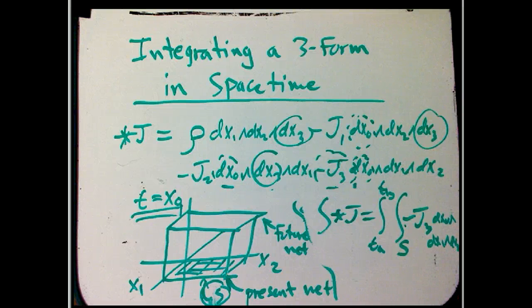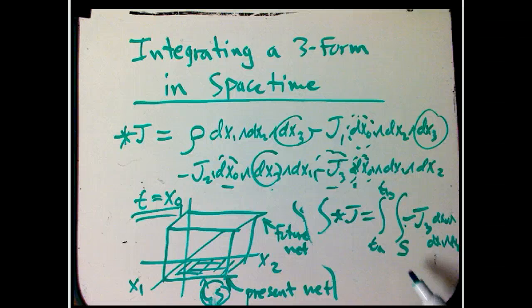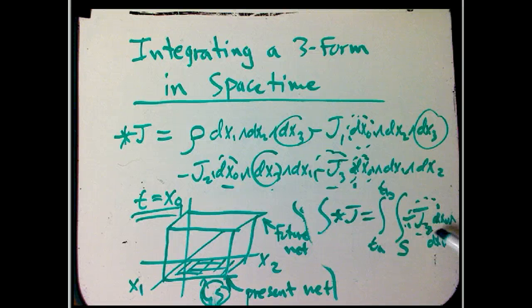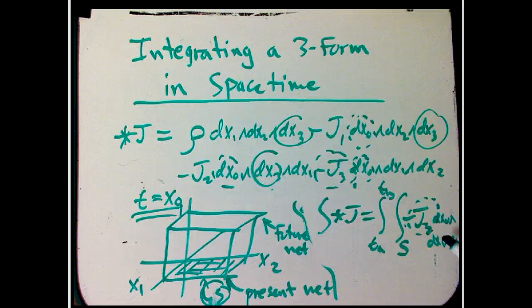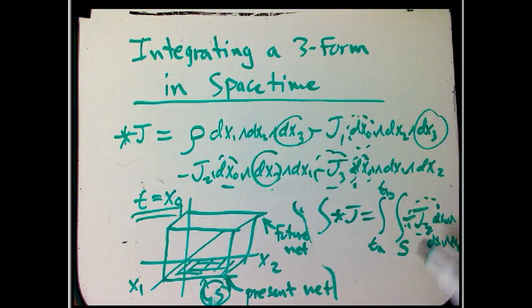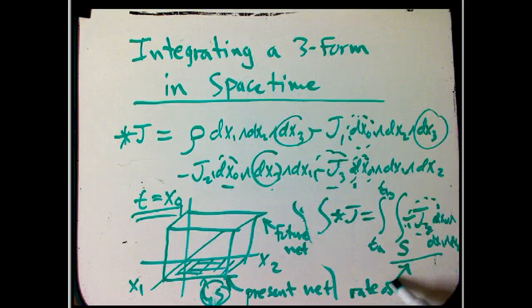I'm taking a current component, exactly the current component that's perpendicular to this surface. Remember, this surface was entirely in x1 and x2. So that's exactly what I'd want to integrate to take the flux through that surface. I'm integrating it over the surface. That's going to be a rate of flow of current.